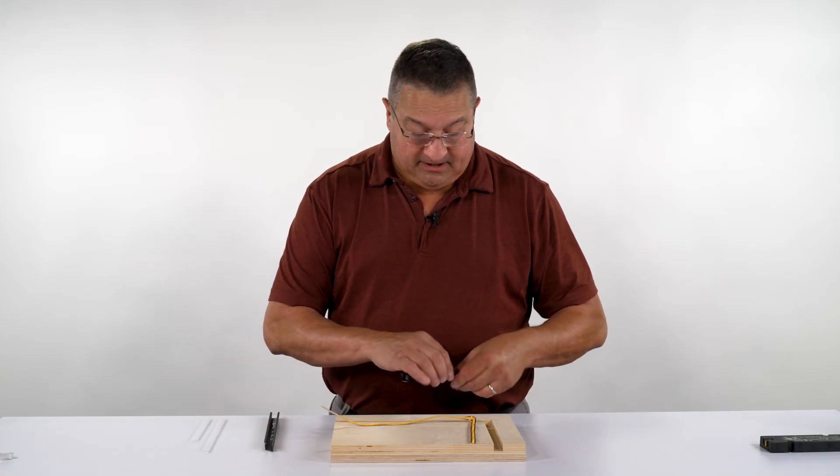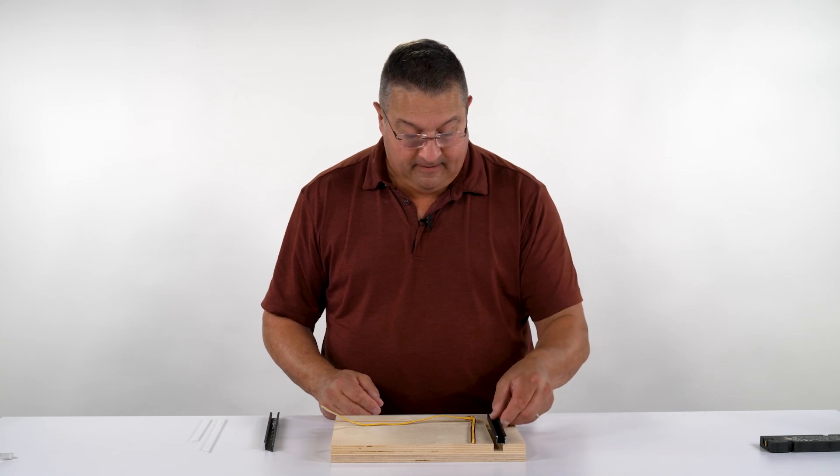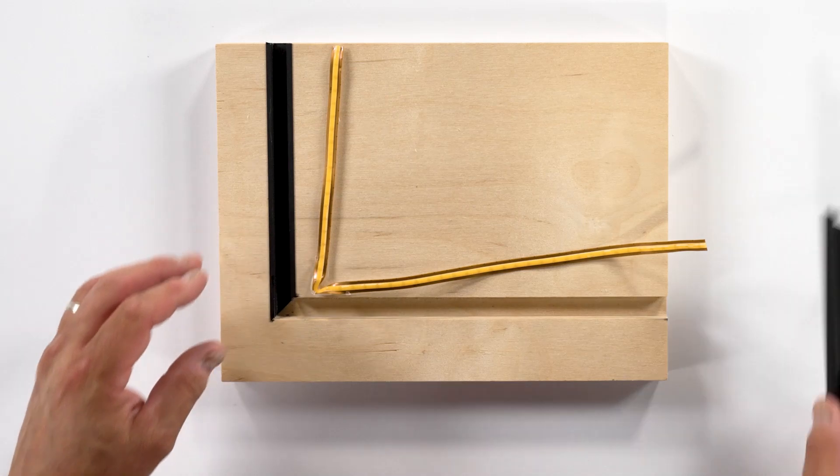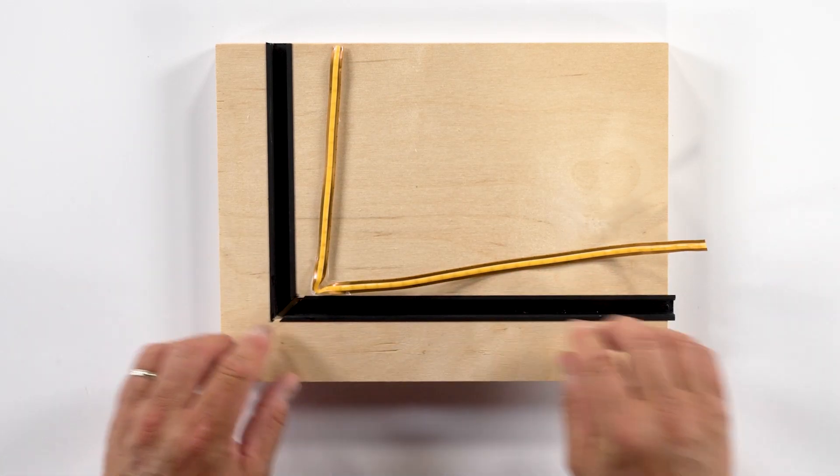From here it becomes decently easy to do the installation. We will do this by placing our aluminum into place in the dado.